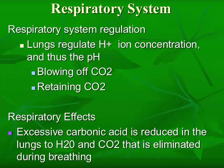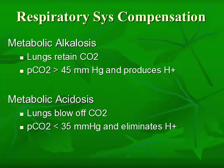In the respiratory system, the lungs are going to regulate the hydrogen ion concentration and therefore the pH. That is done by blowing off carbon dioxide, as in hyperventilation, or retaining carbon dioxide, as in hypoventilation. The lungs will try to compensate. If you decrease oxygen, you wind up increasing the CO2. The excessive carbonic acid is reduced in the lungs to water and carbon dioxide that is eliminated during breathing, and the body will respond by either speeding up and deepening the breaths, or making them more shallow and slowing them down.